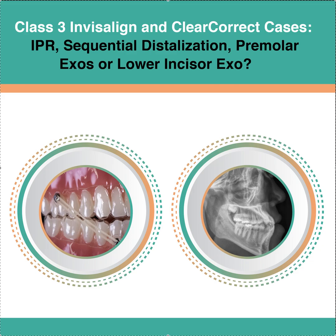So if you've done Class 3 cases, first of all, you want to make sure you're working with an aligner system that has all the functionality that you need for a Class 3 case, so you have all different types of treatment modalities that you can use to get an ideal outcome. The next thing you need to do is take a cephalometric x-ray and make sure you're getting cephalometric numbers. You need to find out a lot of different things from the ceph that's going to help you build it into your plan.